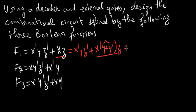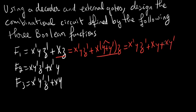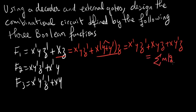So F1 really equals X̄YZ̄ plus XYZ plus XȲZ plus XȲZ̄, expanding the terms. This gives us the minterm function with minterms 2, 5, and 7. So we have now derived F1 in minterm form.